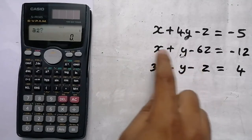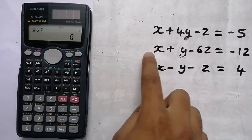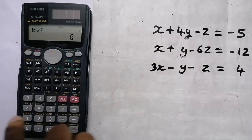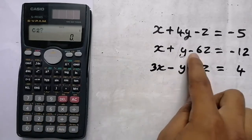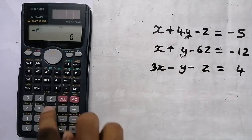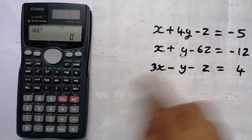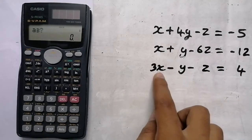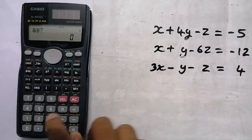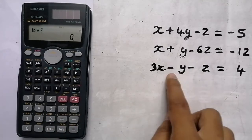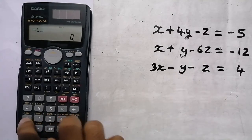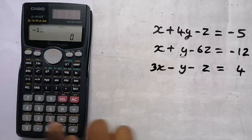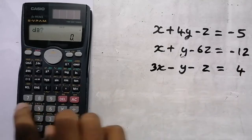For the second equation: x is 1, y is 1, z is minus 6, equal to minus 12. For the third equation: x is 3, y is minus 1, z is minus 1.